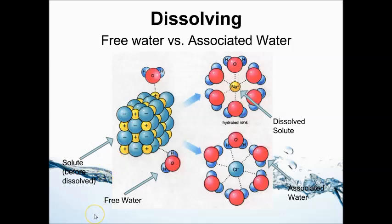Now how does this work? There's what we call free water and associated water. Free water is water molecules that are free — not bound or attached to anything. Associated water are water molecules that are associated with the solute. When you put a block of salt — sodium chloride — into water, the water molecules are attracted to it because it's ionic. It has positive and negative charges, and water is polar, with a positive end and a negative end. The oxygen end is attracted to the positive ions, and the positive hydrogens are attracted to the negative ions of the salt.